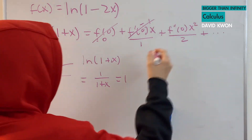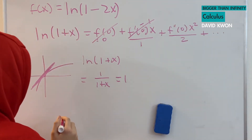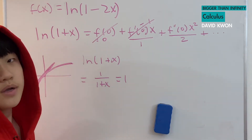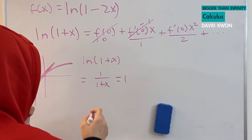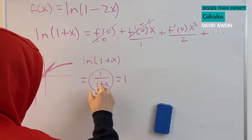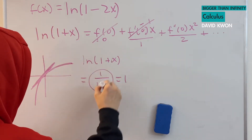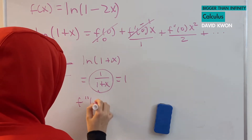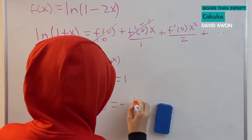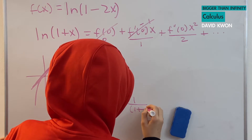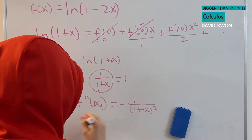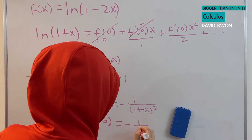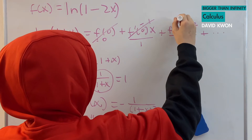Now let's find the value of f''(0). I will differentiate 1 over (1 + x). So f''(x) is equal to negative 1 over (1 + x) squared. And when I put in 0, f''(0) is equal to negative 1.